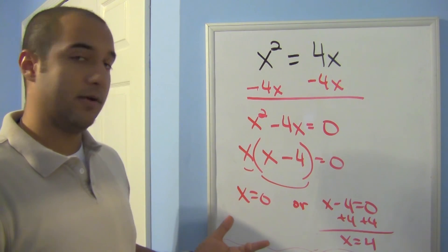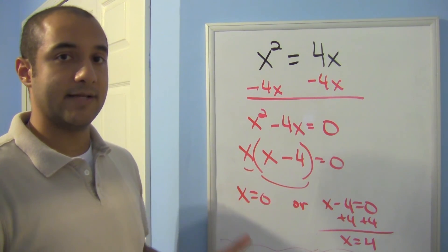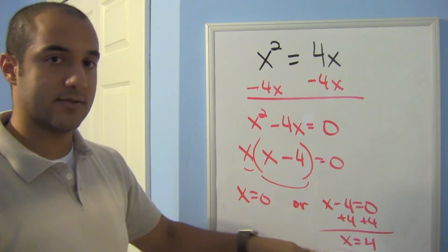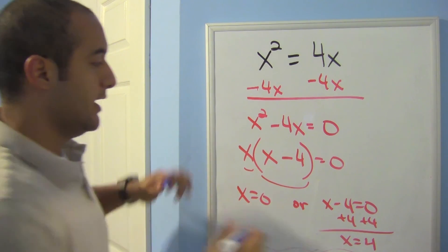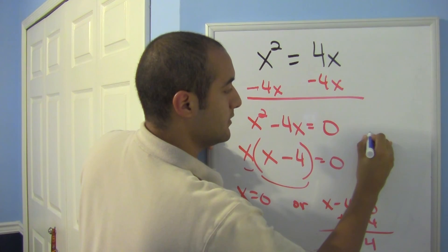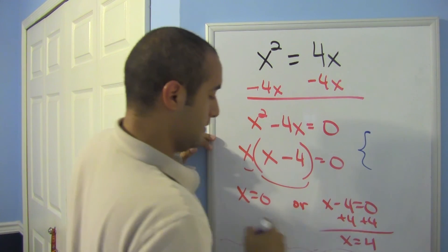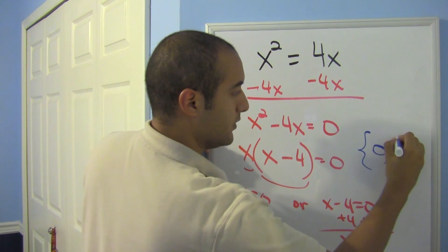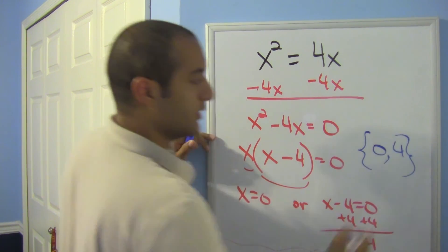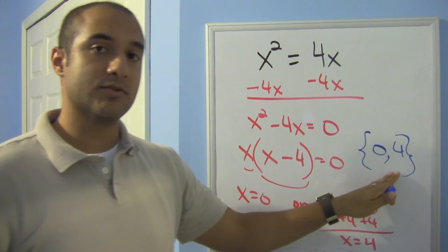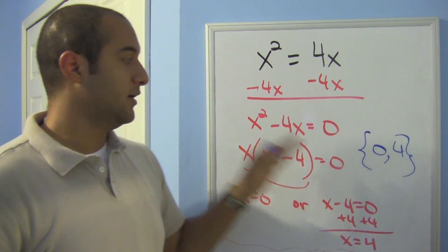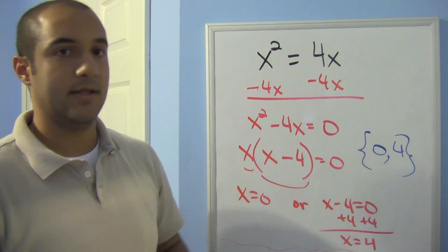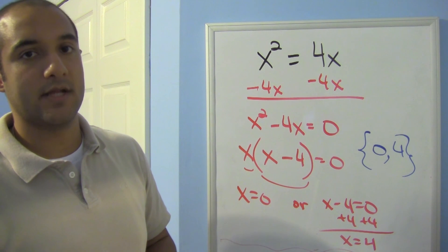Those are my two answers: 0 and 4. Depending on your teacher, they might want you to write them as a solution set — so instead of leaving the answers separately, you write them in a set as {0, 4}. That would be the solution set notation for this problem.